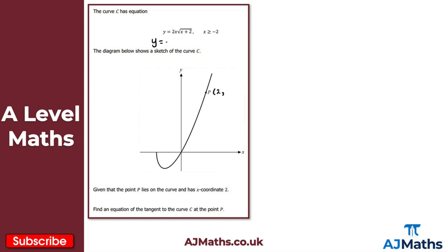Next, I'll find the gradient at point P by finding dy/dx. Since y is expressed as a product of two functions, I'll use the product rule. I define u as 2x, and v as the square root of (x plus 2), which I can also write as (x plus 2) to the power of a half.